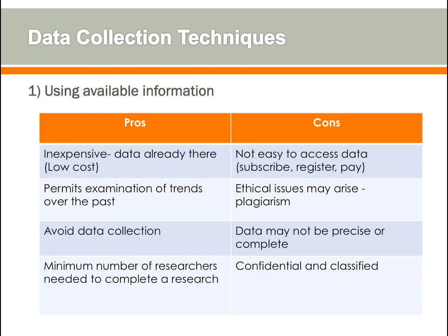The pros of using available information are that it is inexpensive and low cost to access, since the data is already there. It also permits examination of trends over past years, requires no primary data collection, and a minimum number of researchers are needed. The cons are that data is not always easy to access — you may need to subscribe, register, or pay. Ethical issues such as plagiarism may arise, data may not be precise or complete, and certain data are confidential.